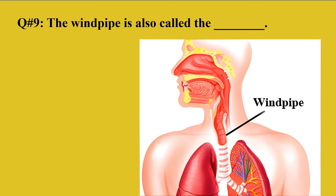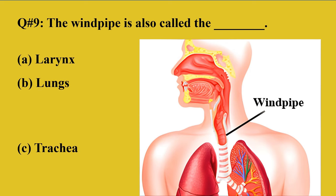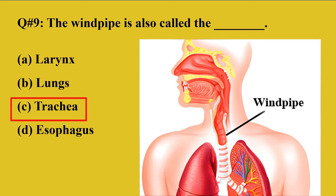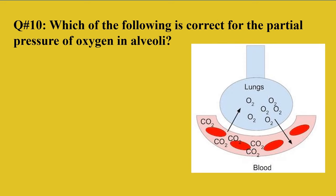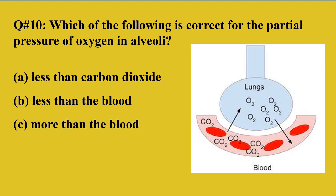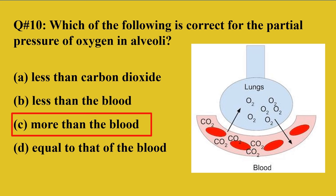Question number 9: The windpipe is also called — A: larynx, B: lungs, C: trachea, D: esophagus. The right option is C, trachea. The trachea is also known as the windpipe and comes after the larynx in the respiratory system. Question number 10: Which of the following is correct for the partial pressure of oxygen in the alveoli? A: less than carbon dioxide, B: less than the blood, C: more than the blood, D: equal to that of the blood. The right option is C, more than the blood, as the partial pressure of oxygen in the alveoli is more than in the blood. The blood has a higher partial pressure of carbon dioxide as a waste product, which is why carbon dioxide moves to the lungs and is exhaled out.